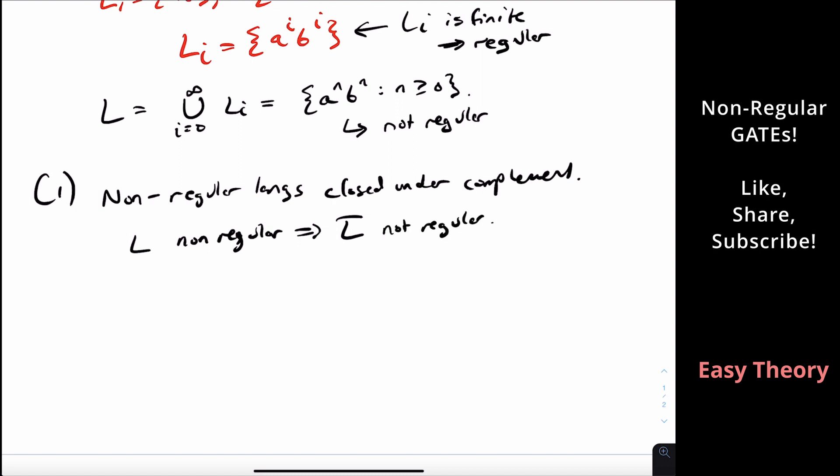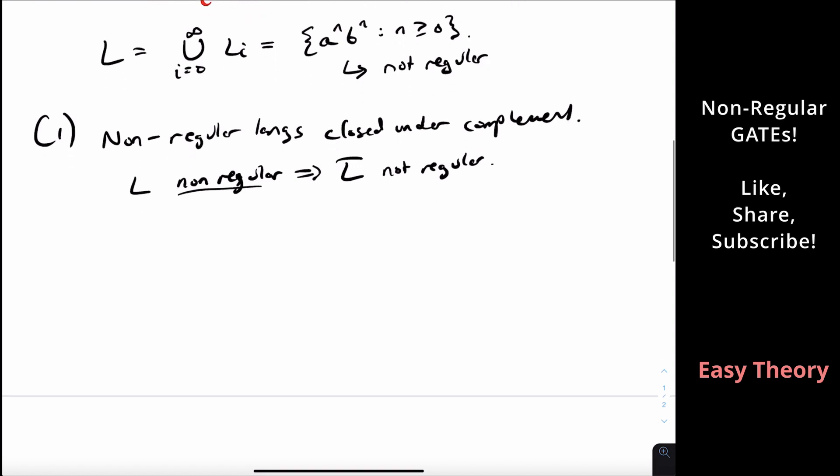The quick proof of that is if L bar were regular, regular languages are closed under complement, so then L bar bar would also be regular, but that's L. So that would imply that L is both non-regular and regular, which is not true.